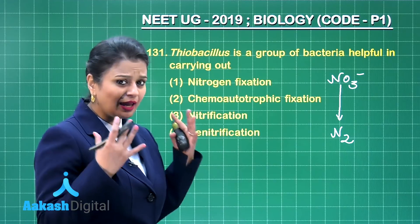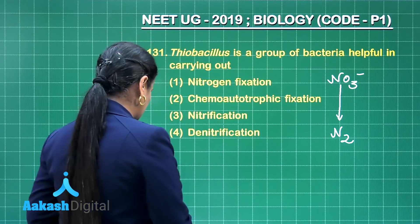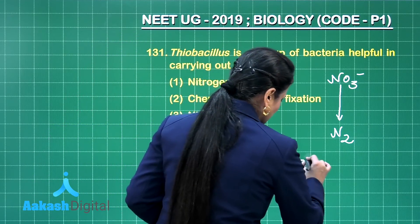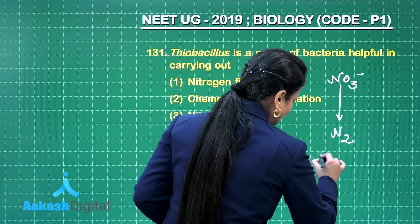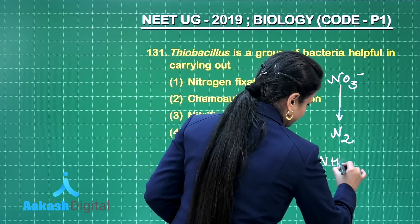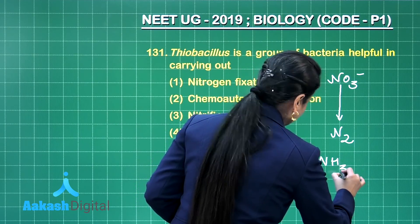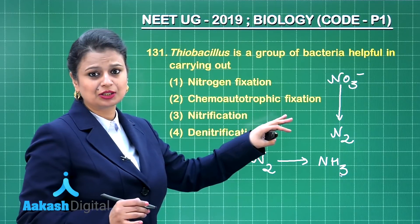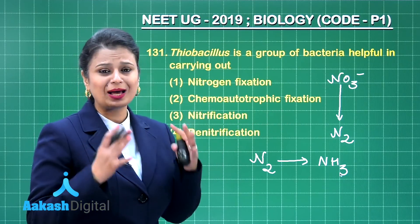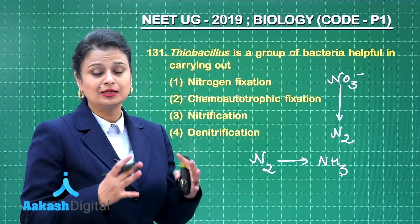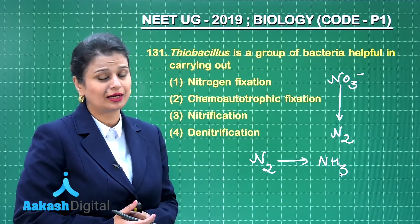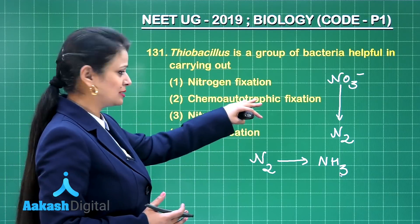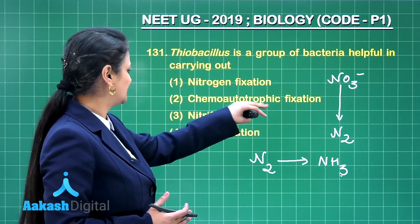Now let's look at the options. Nitrogen fixation — this is not nitrogen fixation; in nitrogen fixation, N2 is changed into ammonia. Chemoautotrophic fixation — Thiobacillus is a heterotrophic bacteria, it is not an autotroph, so it is not related with that option either.